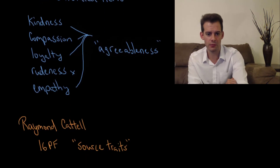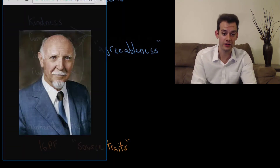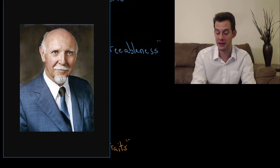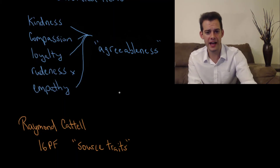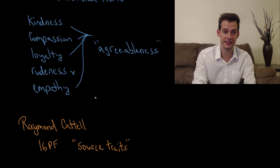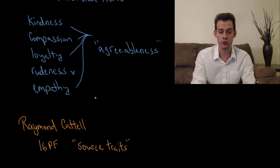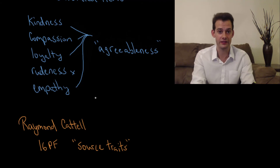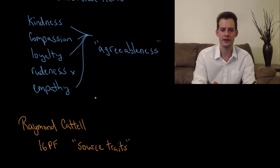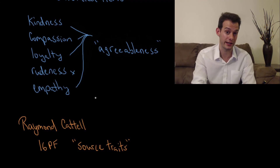One approach comes from Raymond Cattell, who we learned about in intelligence for proposing the distinction between crystallized and fluid intelligence based on factor analysis. Cattell applied factor analysis to personality and created the 16PF test, which refers to 16 personality factors. His idea was that these were the source traits — the most important factors for explaining personality — and his list includes intelligence. We might think that 16 is still quite a lot to think about at once, and maybe some of those factors are actually correlated with one another, so perhaps we can narrow it down even further.